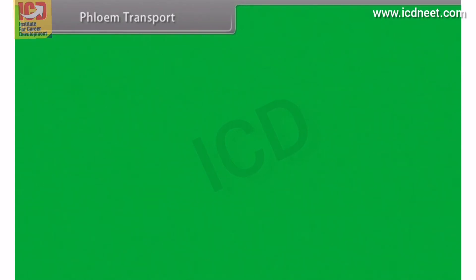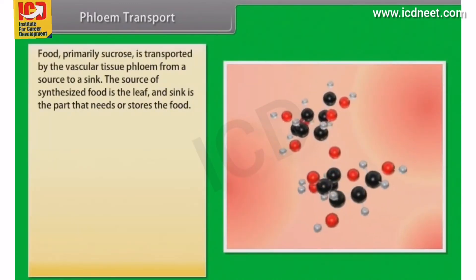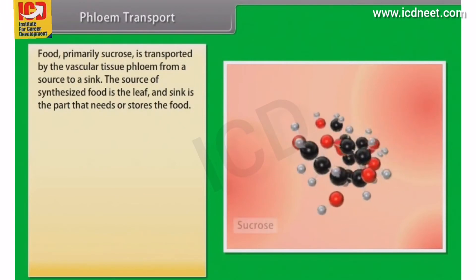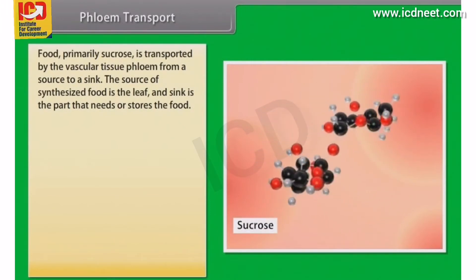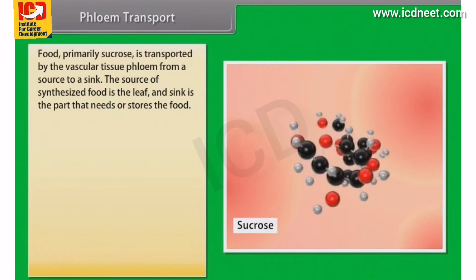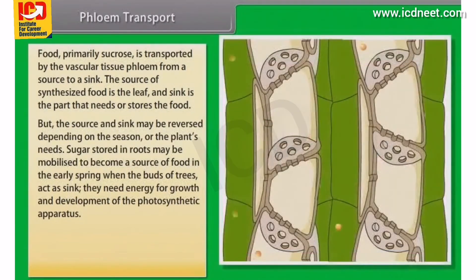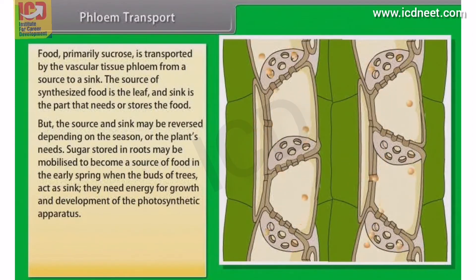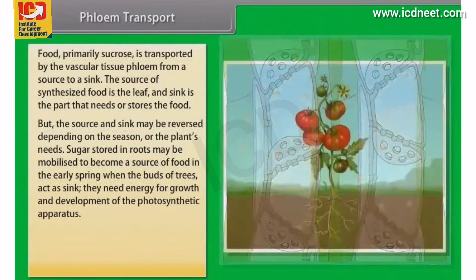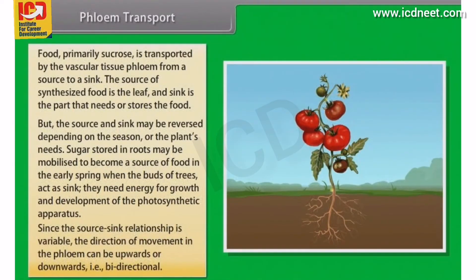Now we will learn about phloem transport. Food, primarily sucrose, is transported by the vascular tissue phloem from a source to a sink. Usually the source is that part of the plant which synthesizes the food. The source and sink may be reversed depending on the season or the plant's needs. Sugar stored in roots may be mobilized to become a source of food in early spring when the buds of trees act as a sink, needing energy for growth and development of the photosynthetic apparatus.